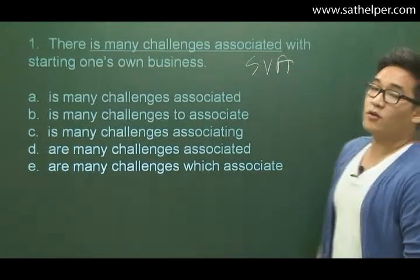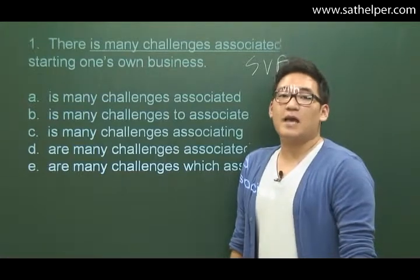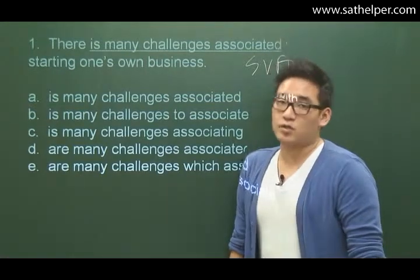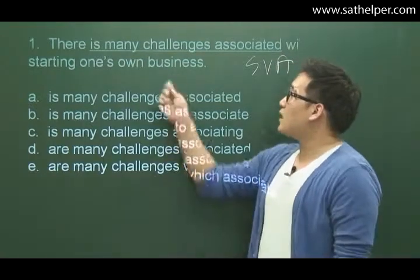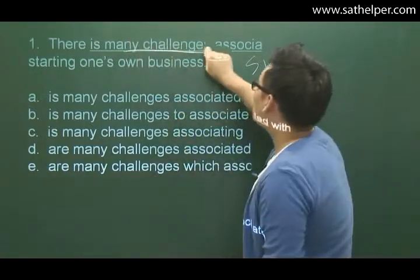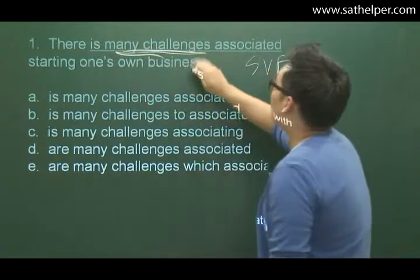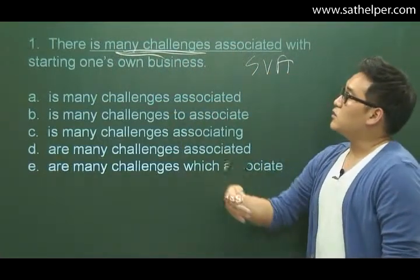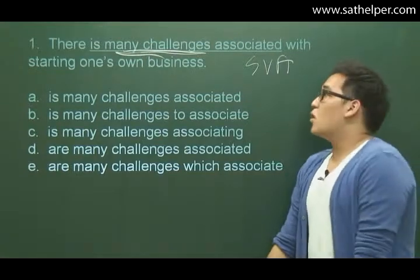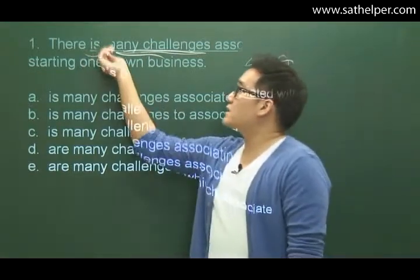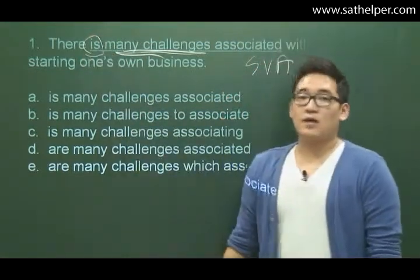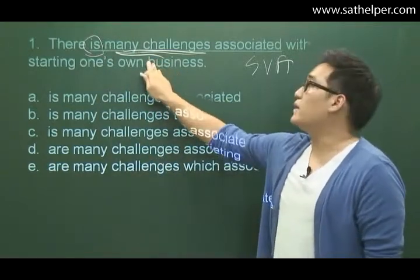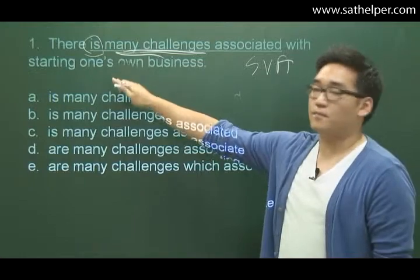It's an inverted sentence, meaning that the subject comes after the verb, which is the one trick here, but something you should be able to identify. The subject here is actually 'many challenges.' Is it possible to have a singular verb with a plural noun? Absolutely not. We need to make this into a plural verb.